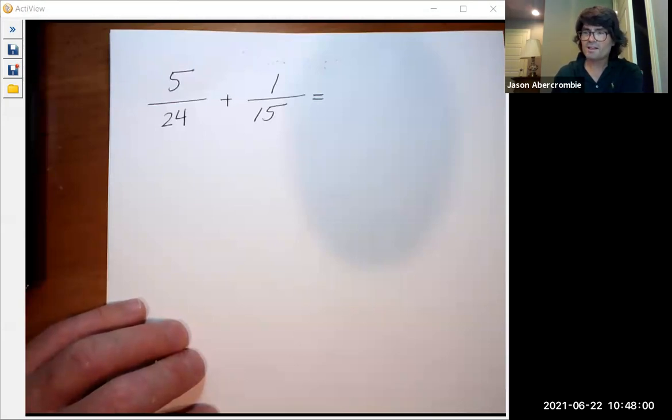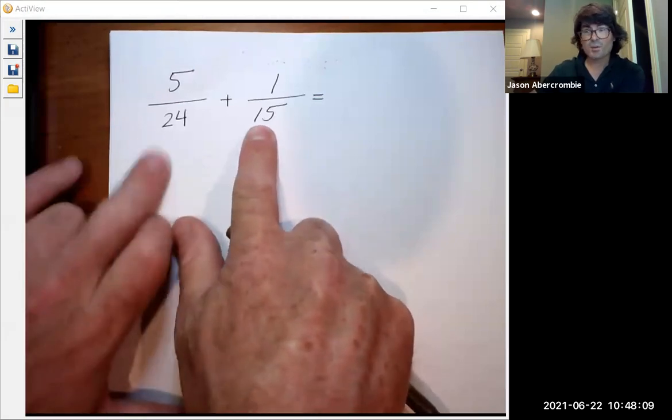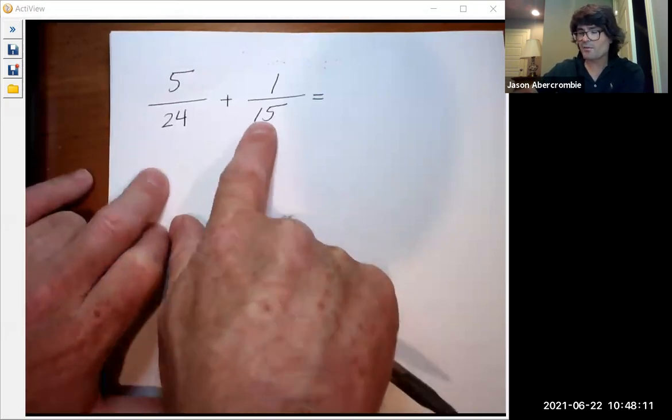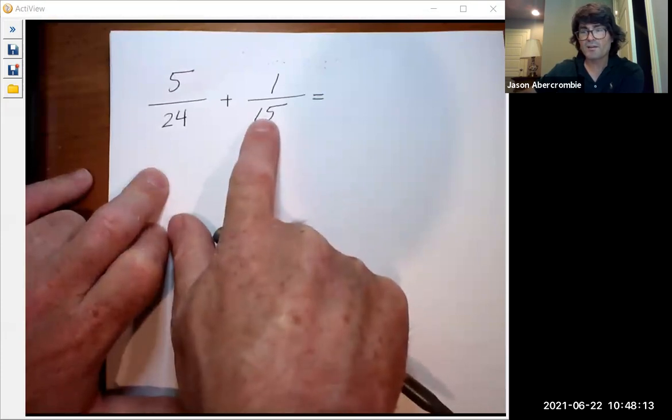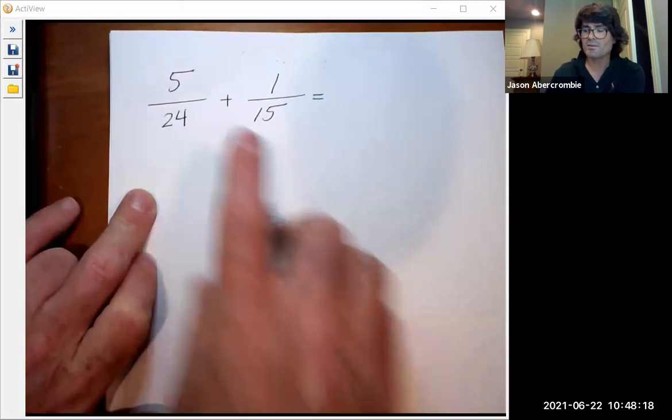And, you know, you just have to kind of do some trial and error if you want to try and find that number. A trick that you can use is take one of them, and since like three is common, take out a three from this guy, which would leave a five. And then multiply it times 24, and that makes 120. That's a little trick you can use.